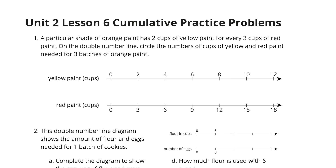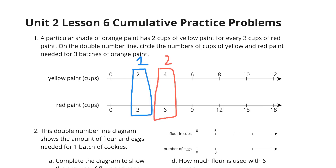In question 1, a particular shade of orange paint has 2 cups of yellow paint for every 3 cups of red paint. On the double number line, circle the number of cups of yellow paint and red paint needed for 3 batches of orange. 1 batch was 2 yellow to 3 red. If I double that, that's 2 batches, and 2 batches is 4 to 6. And lastly, to triple the original, if I circle this one here, it's 6 cups of yellow to 3 of red.